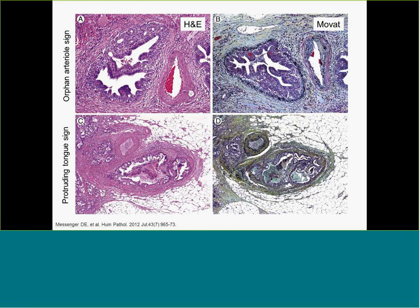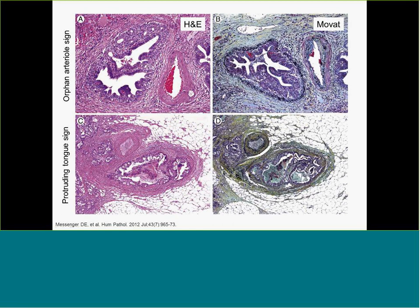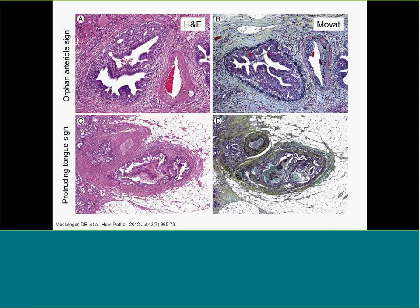Key morphological features to look for include the orphan artery sign — a rounded tumor nodule adjacent to an artery where an elastin stain clearly demonstrates it sits within an endothelial-lined space. The other feature is the protruding tongue sign, at the interface between the muscularis propria and the pericolic adipose tissue, where vessels protrude forward into that space. If you have that protruding tongue sign in terms of tumor, it more often than not turns out to be venous invasion.